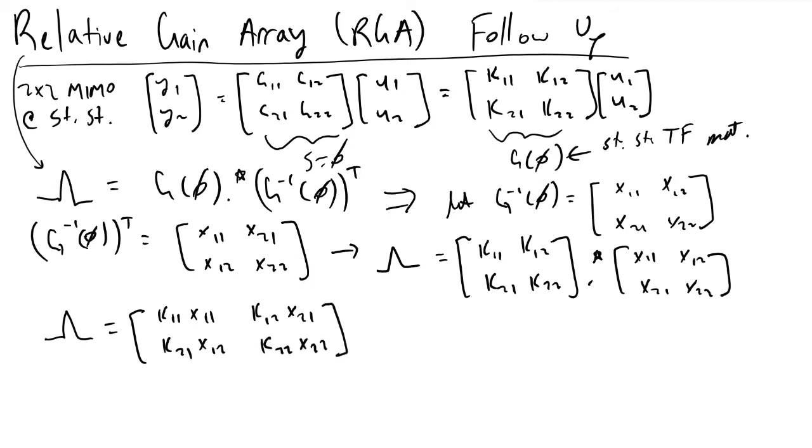This is a very quick way that allows us to evaluate what our relative gain array is when we're dealing with square matrices that we can invert like this. Once we have reached this point, we can now ask ourselves how to pair our inputs and outputs. To go over a quick example and go into a little bit more detail on that, let's say we evaluated a matrix and we ended up finding that we got minus 0.8, 1.8, 1.8, and minus 0.8.